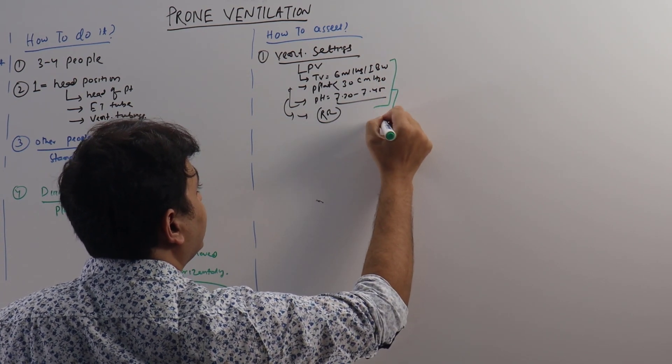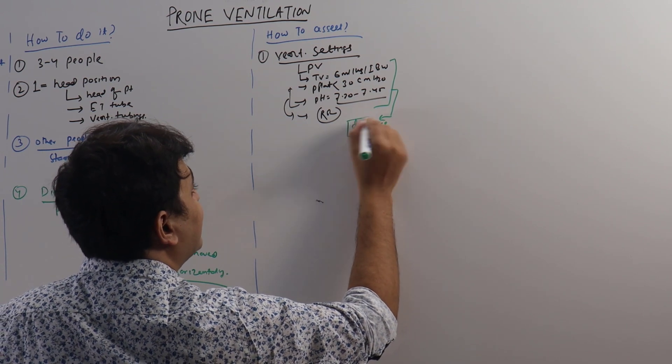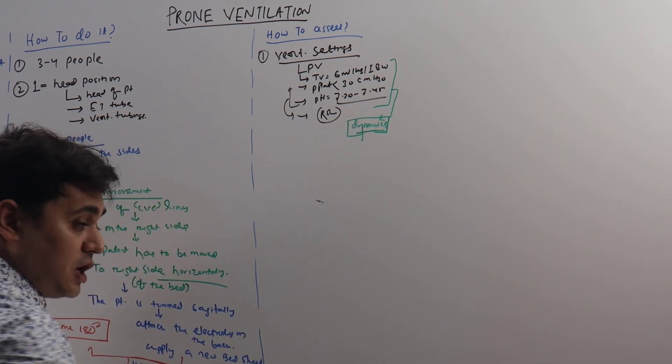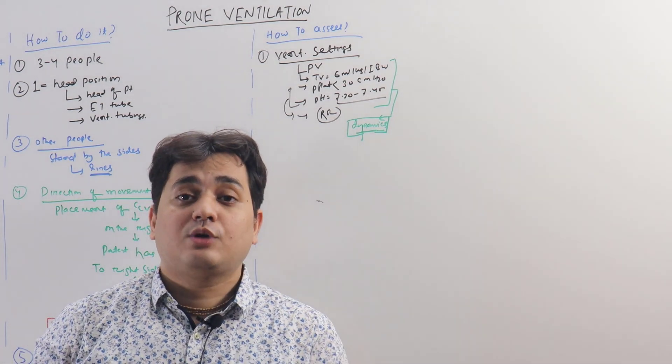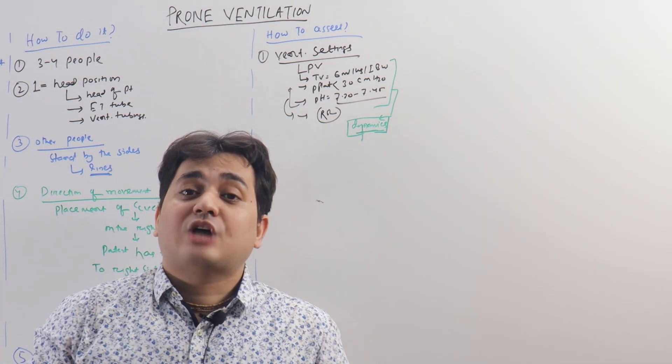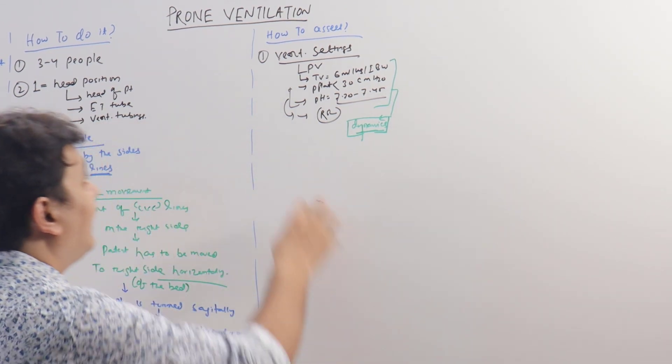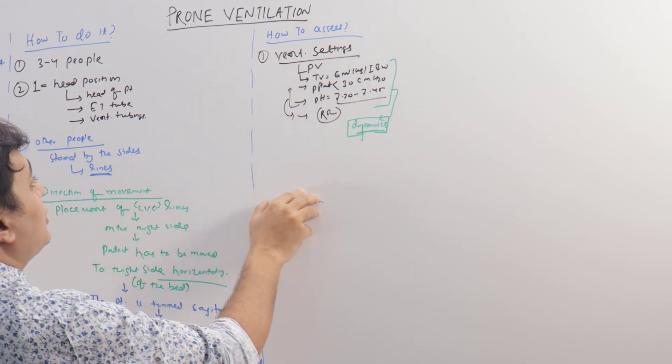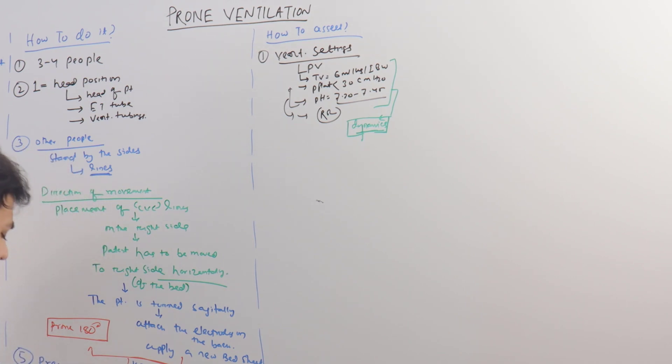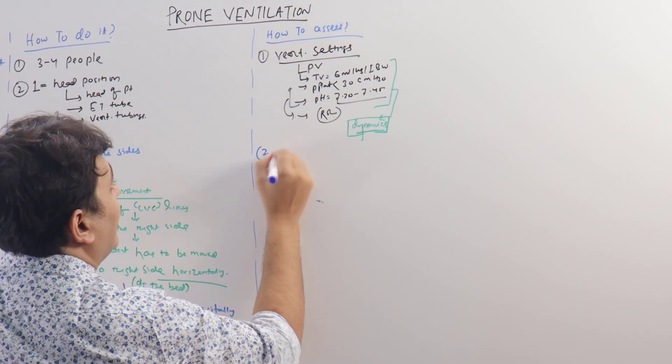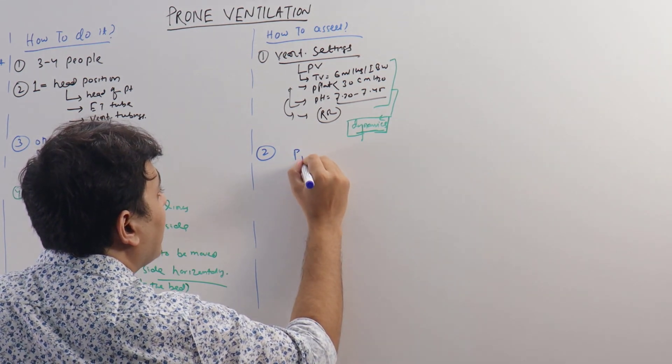That is the way we have to adjust the respiratory rate also. All these things are dynamic, not static as we discussed in our previous discussion. It will change depending upon the change in respiratory mechanics of the patient. If there is acidosis, you have to increase the rate, sometimes add bicarbonate. If there is high pH, decrease the tidal volume by one. This is the way: even when the person is in prone position, we have to follow all the guidelines that have been set beforehand.